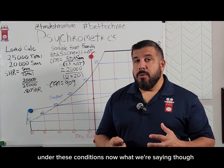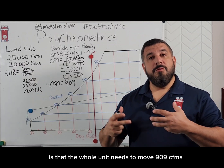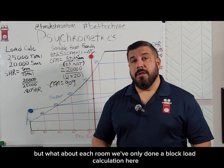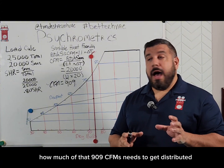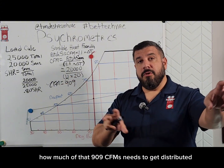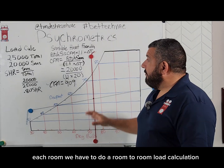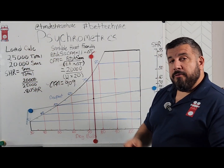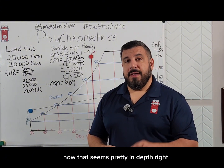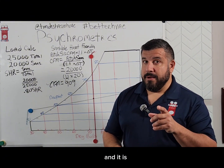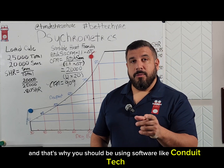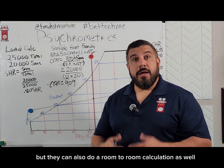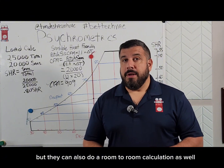The whole unit needs to move 909 CFMs, but what about each room? We've only done a block load calculation here. To determine how much of that 909 CFMs needs to be distributed to each room, we have to do a room-to-room load calculation, which means doing this whole process for every single room in the house. That's why you should be using software like Conduit Tech, which can do both block load and room-to-room calculations.